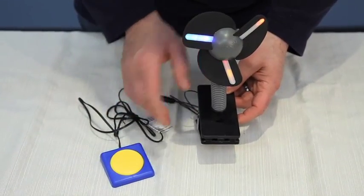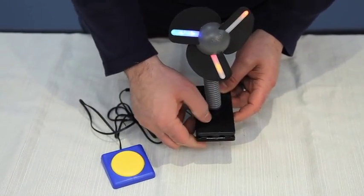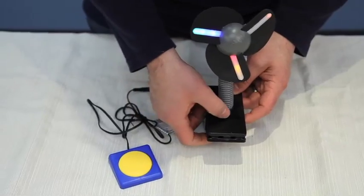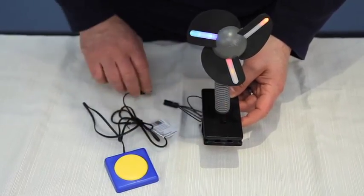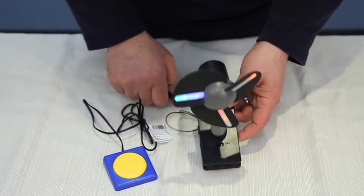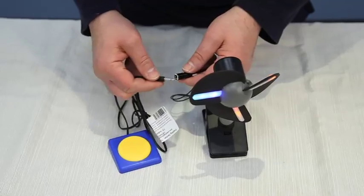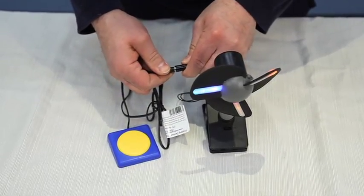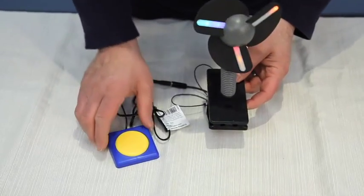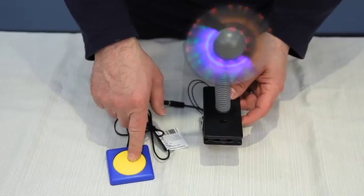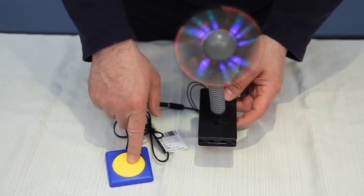Okay once we have our battery interrupter in place you're going to want to turn the devices or toys on off switch to on. And then you're going to want to connect your switch to the interrupter jack. Now once that's in place then you can activate your switch and it should work.